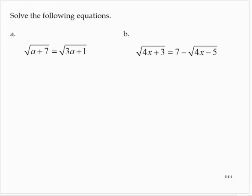Solve the following equations. The square root of a plus 7 is equal to the square root of 3a plus 1. When we have an equation that has square roots on both sides, we are allowed to square both sides.